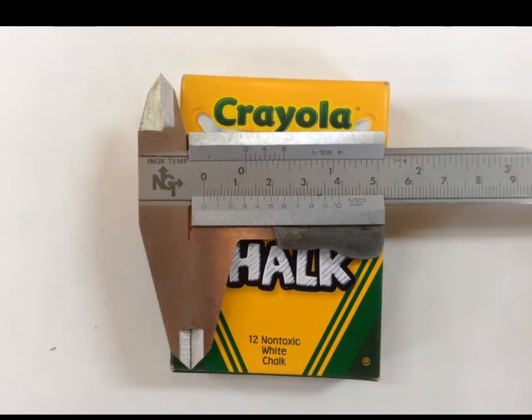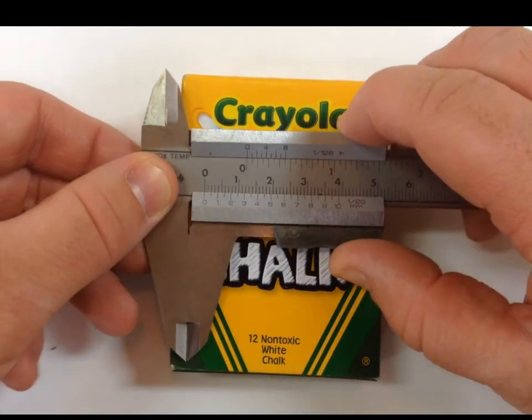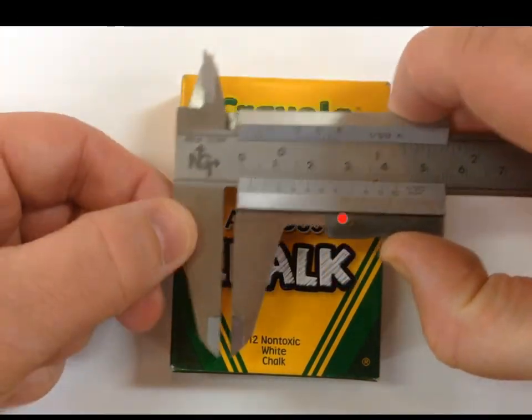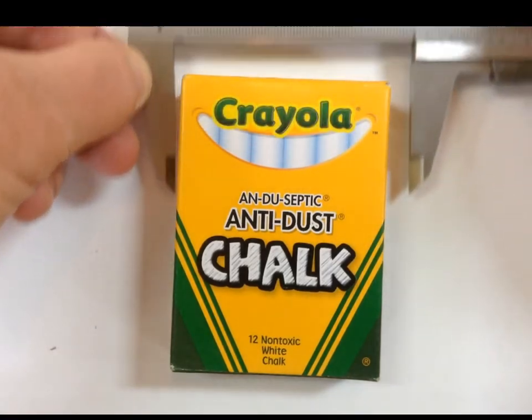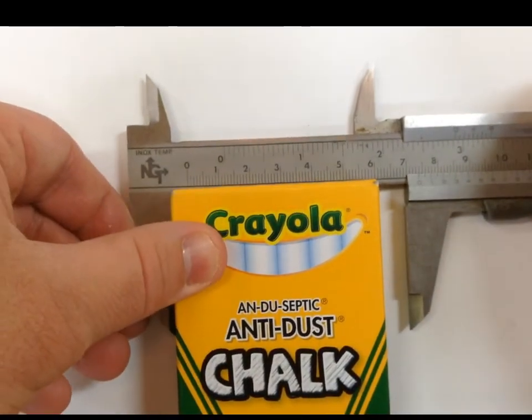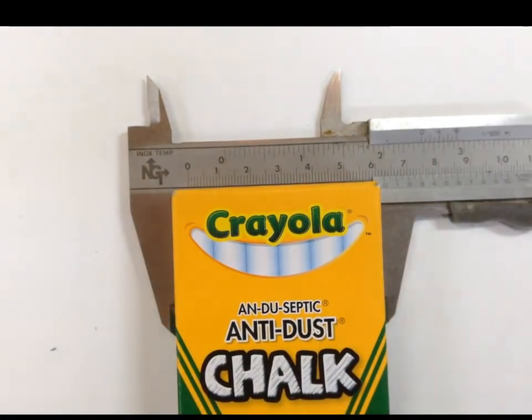To use the calipers, what you're going to do is grip this little lever right here. Then you're going to open them, slide them around, and push them snugly back. Now you will also notice that we're using a box of Crayola anti-dust chalk. Here in Westermann, chalk is important. This chalk is the best.